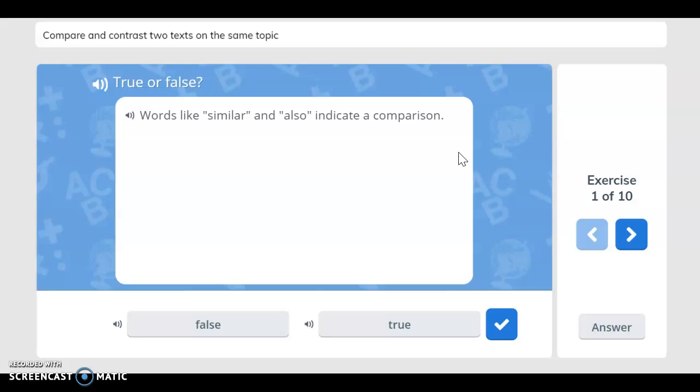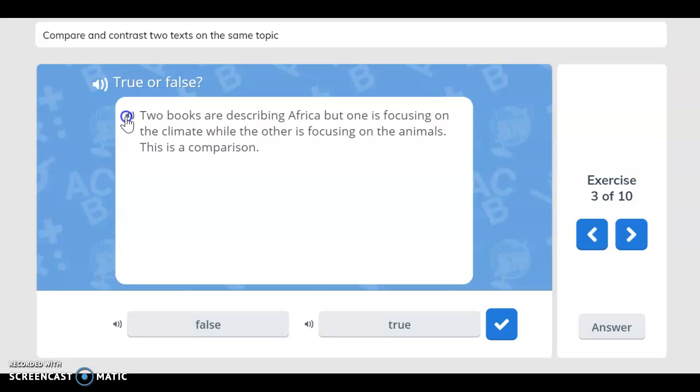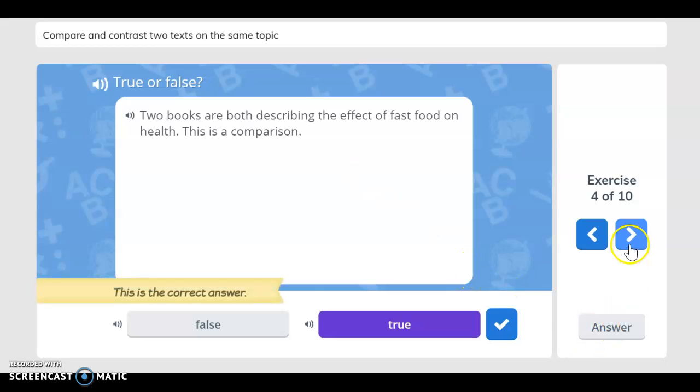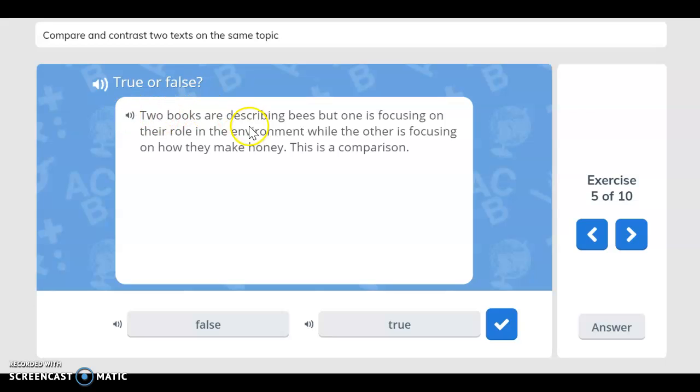Compare and contrast two texts on the same topic. Are describing Africa but one is focusing on the climate while the other is focusing on the animals. This is a comparison - false. If you said false, you are correct. Are both describing the effect of fast food on health. This is a comparison. If you said true, you are correct.